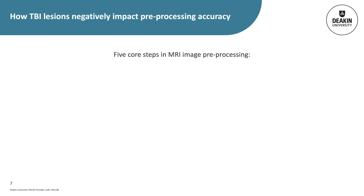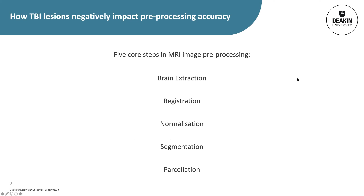The five core steps in neuroimaging pre-processing I'll be exploring are brain extraction, registration, normalisation, segmentation, and parcellation. Although I'll be focusing on T1-weighted MRI with my examples, much of this is applicable to other MRI modalities as well. I'm going to focus more on the basic concepts of each step, so apologies to those already well-read on this literature.